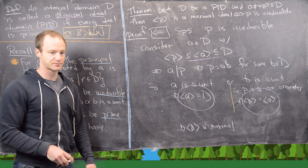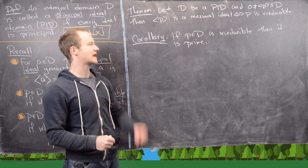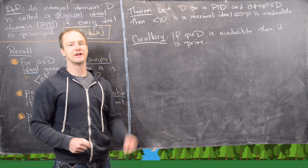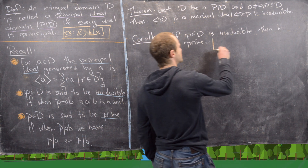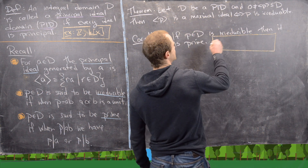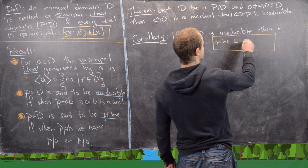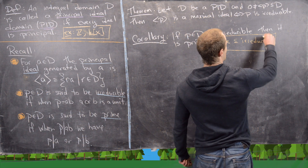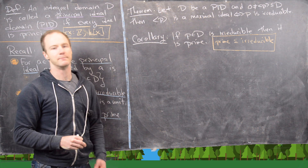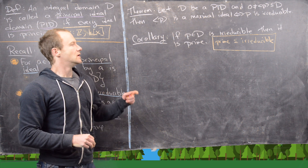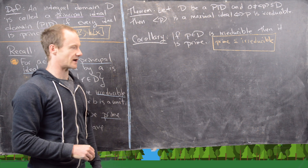An important corollary is that in a PID, the notion of an element being irreducible is the same as the element being prime. In an arbitrary ring this is not the case — primeness is more restrictive than irreducibility, and we saw elements earlier in the series that were irreducible but not prime. But in a PID these notions coincide.